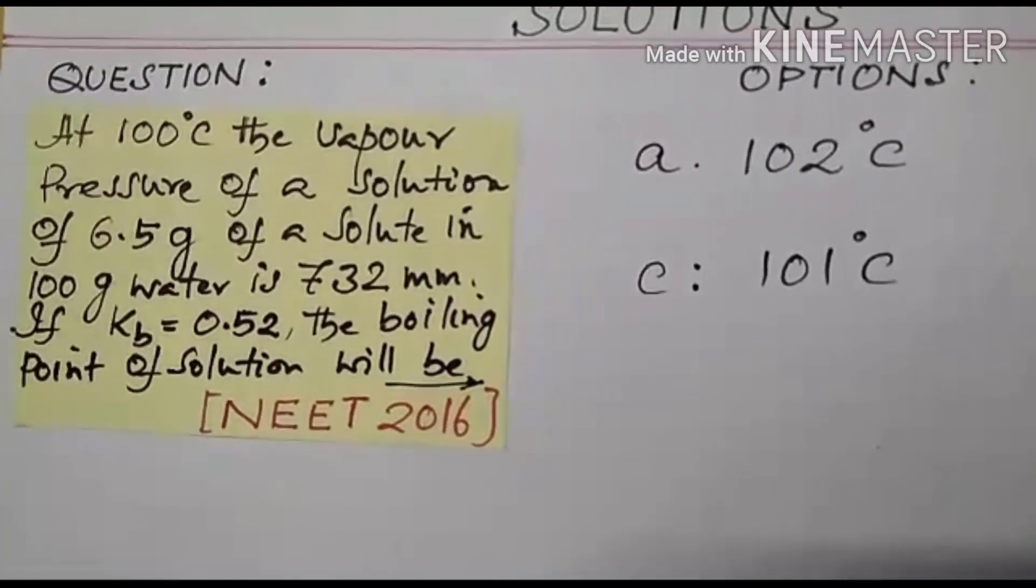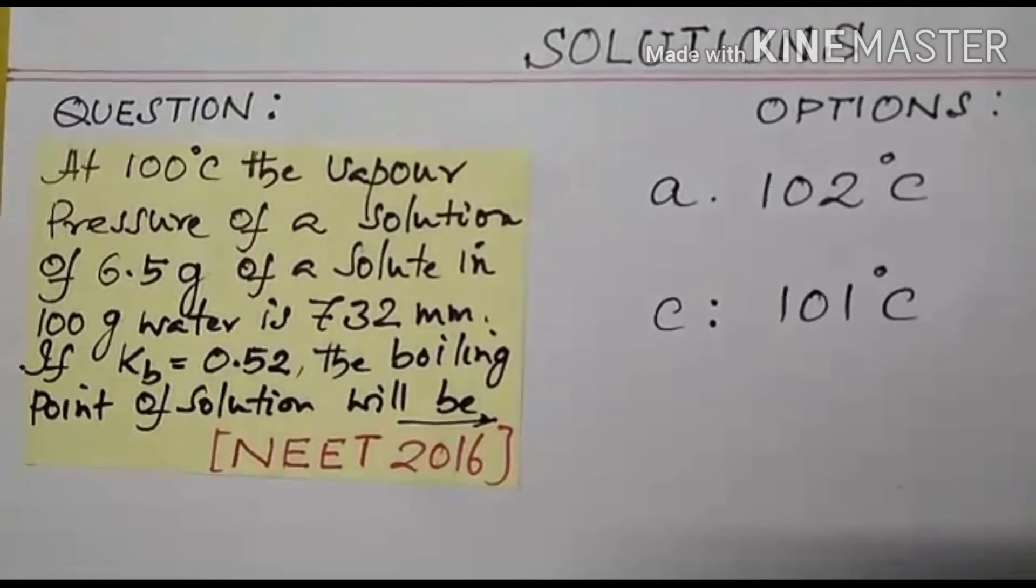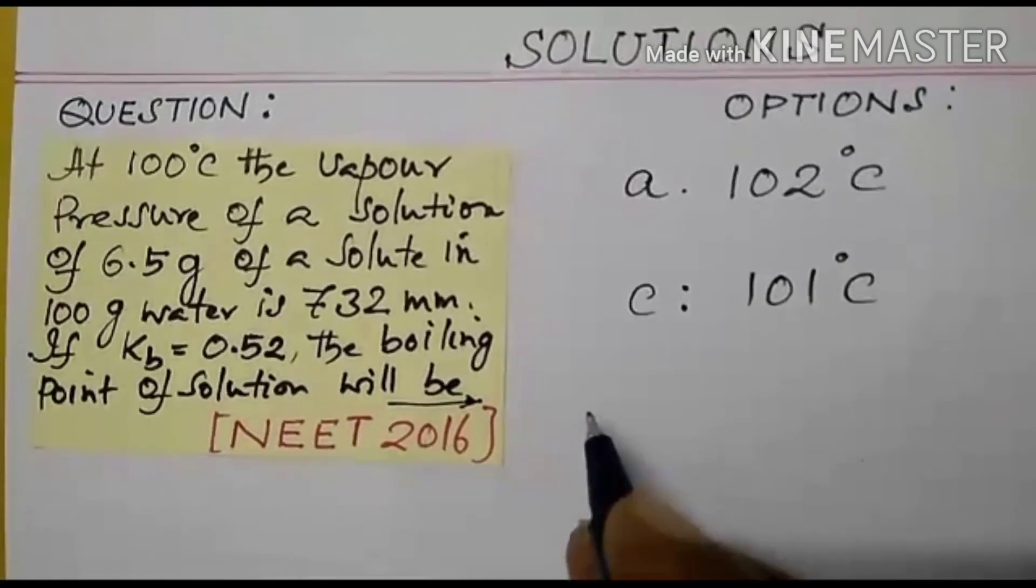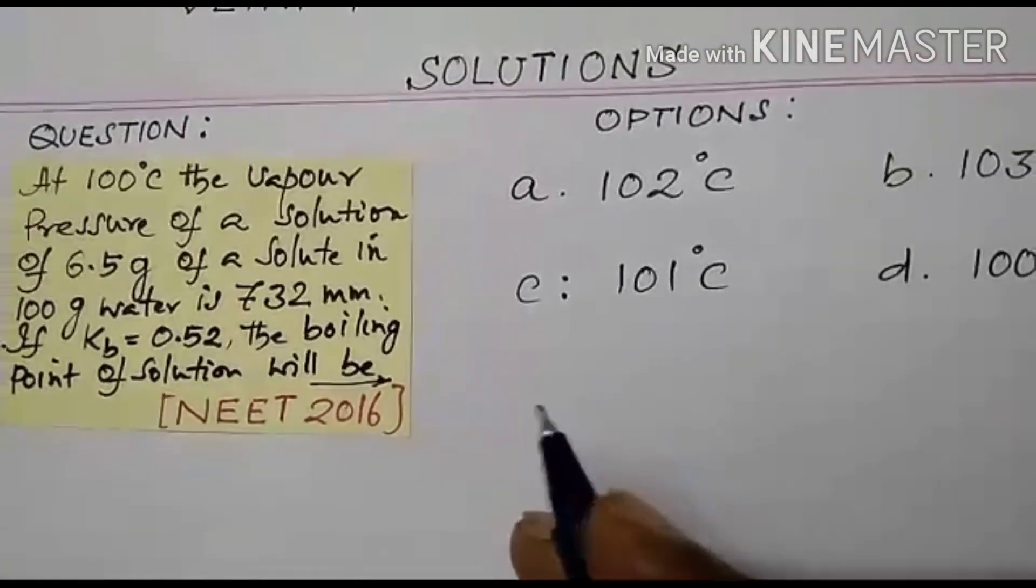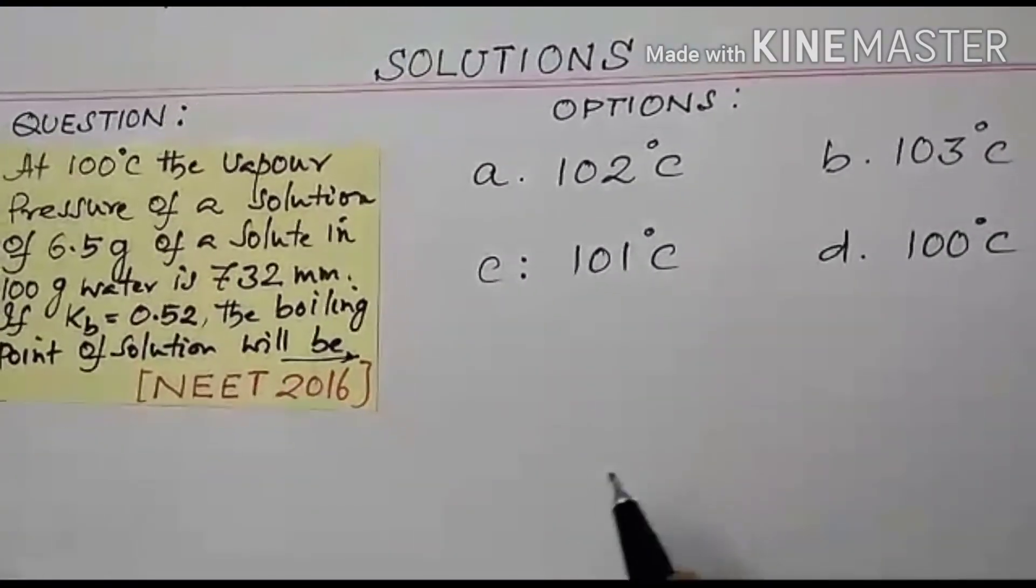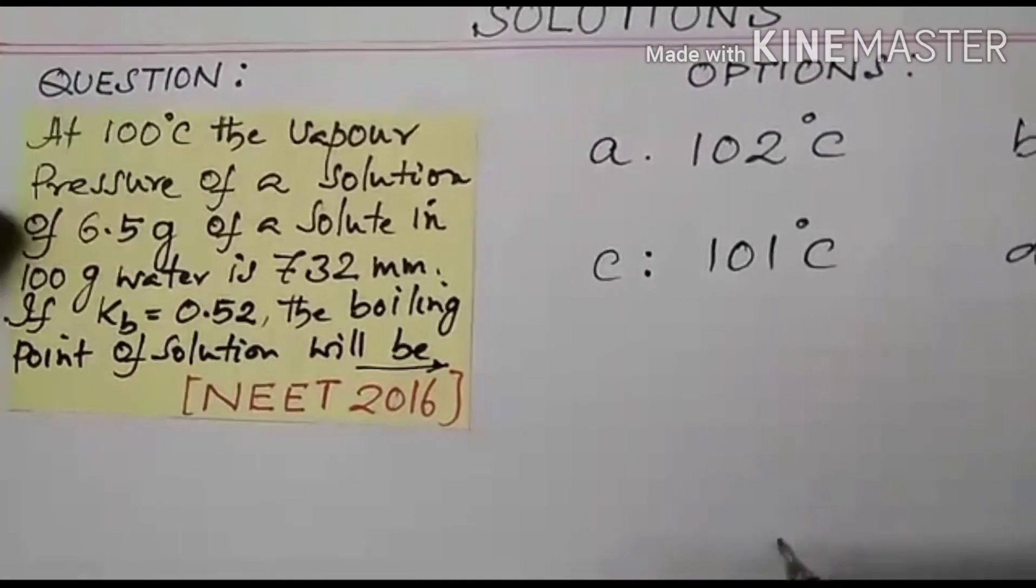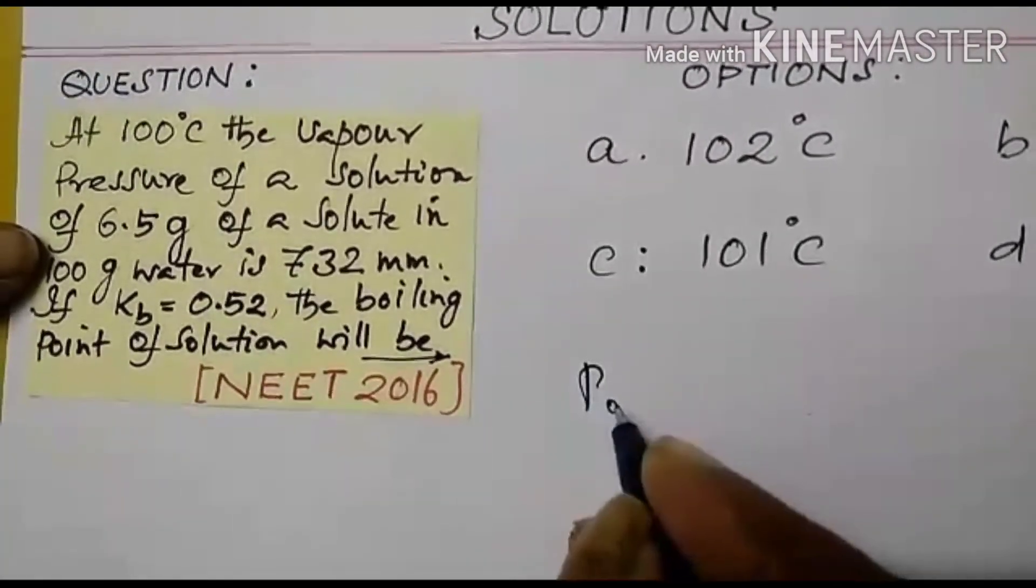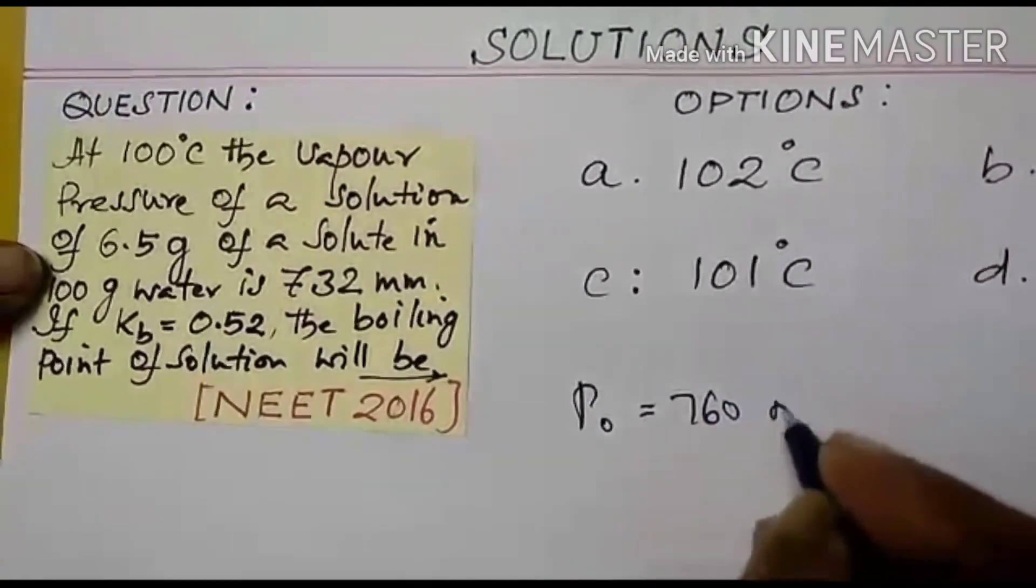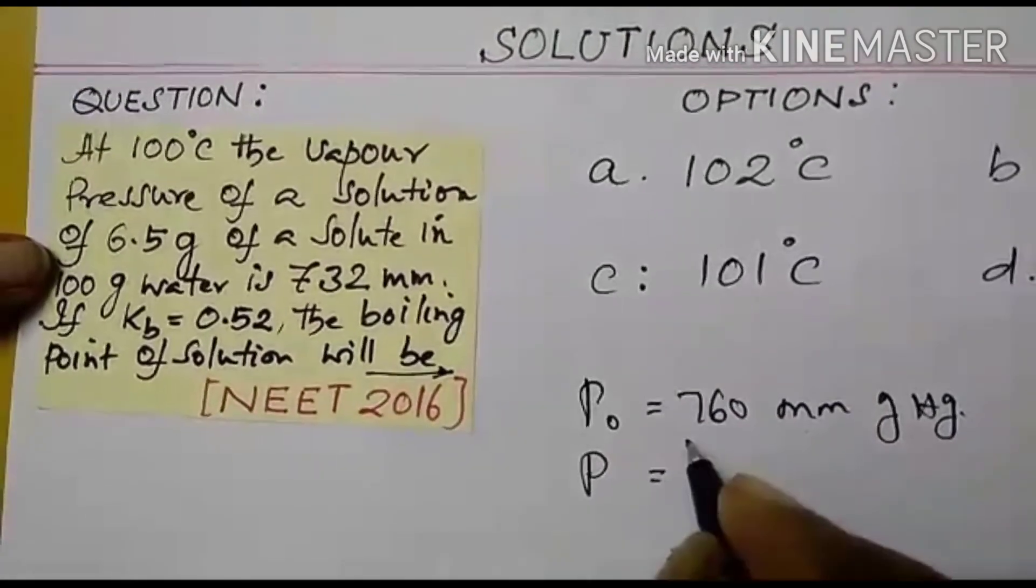I am recording the colligative property lesson. Some data are available. Let me write the data first. Then only we will have an idea about the problem. Now let me write the data. Whenever you are writing data in the problem, you write according to the sum. Then only you may not miss any data of course. Now at 100 degree, the vapor pressure of the solution, you know it is P. P0 is 760 millimeter of mercury. This is the standard. I am taking P. This is for solvent.